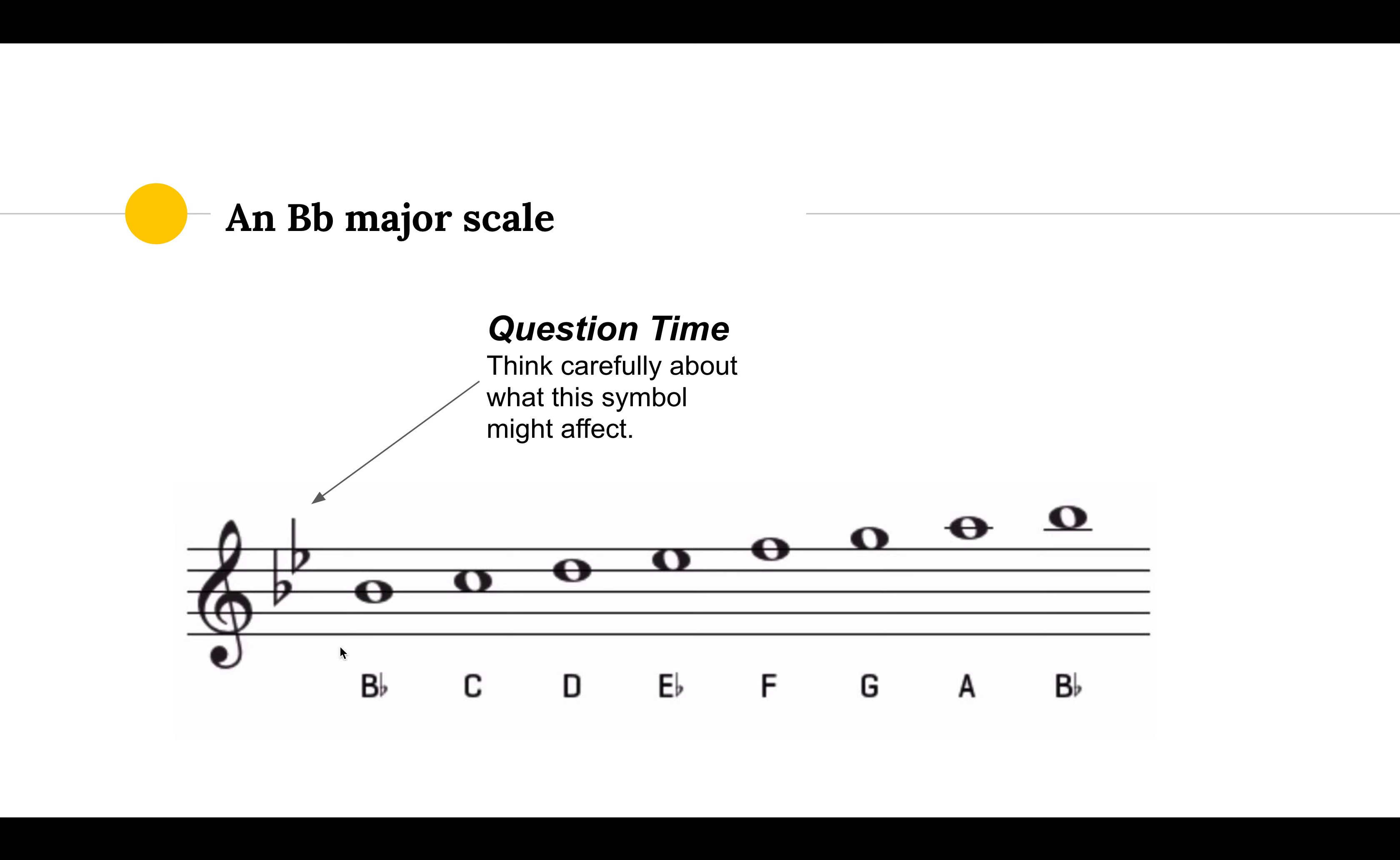Now we need to look at the key signature and see which flats we need to use. We've got a flat on the third line here, so we follow the saying, every good boy deserves football. So it's every good boy, that is a B-flat. So you can see B-flat has been entered there, and B-flat has been entered there.